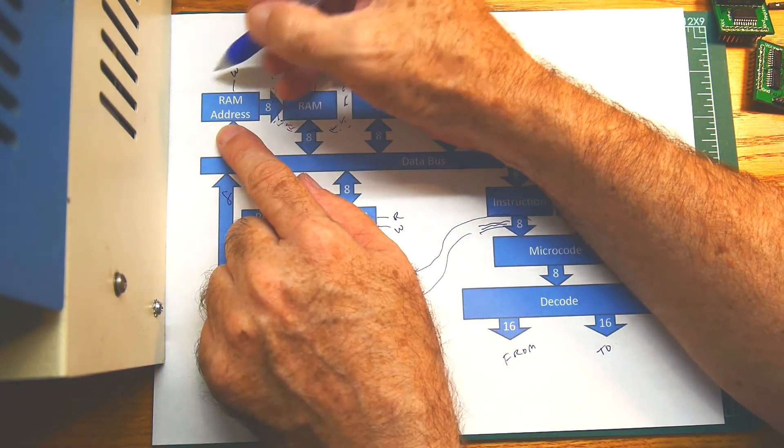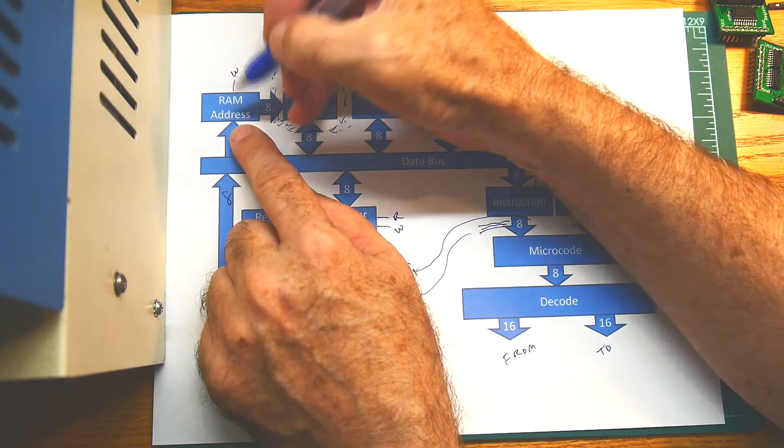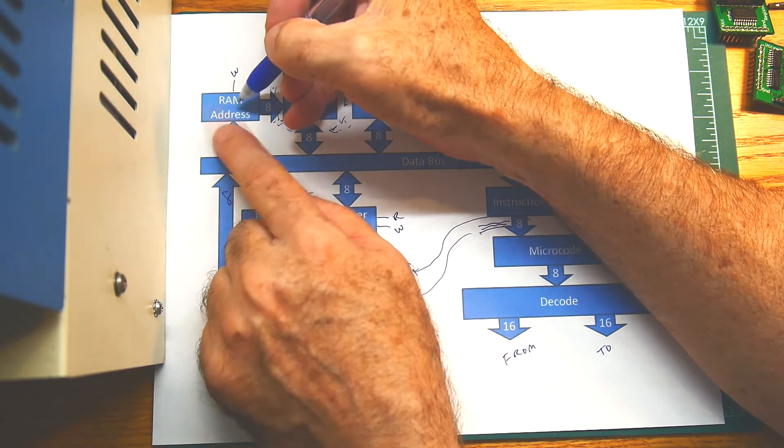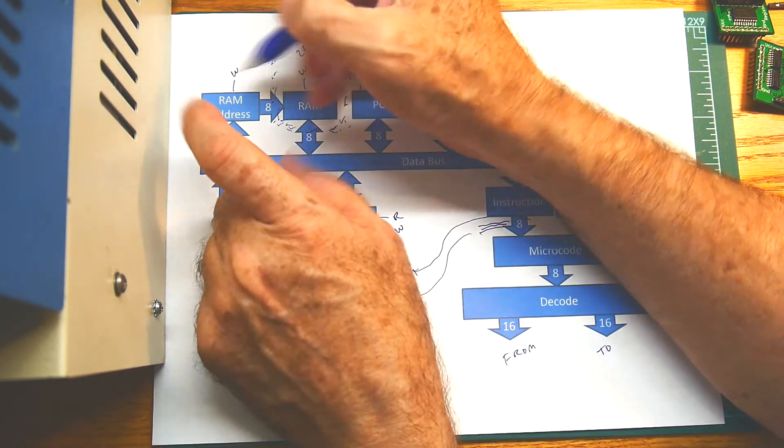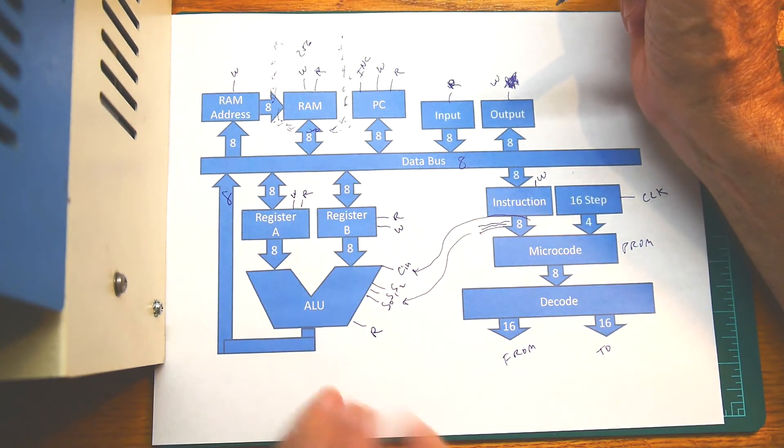We could expand this further. We could put in a secondary RAM address and make this a 16-bit. So you'd have to do double write, once into this register and once into a second register, to give you a 16-bit value if you ever wanted to expand this design.